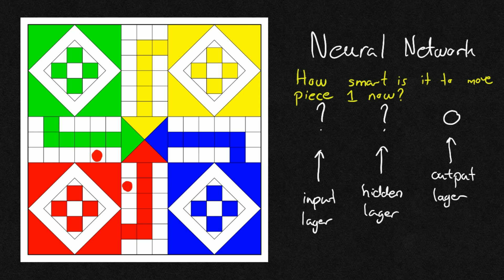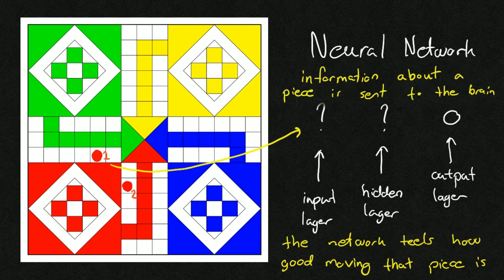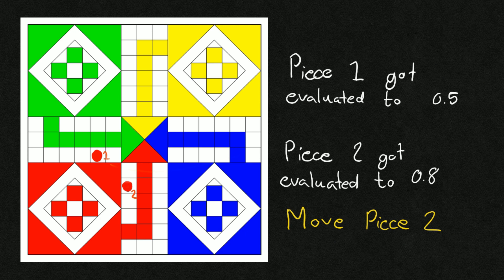What my player would do is that it went through all the pieces that are currently available on the board and slap all the information it knows through the neural network, and then the neural network would give it a value from zero to one. One meaning very, very good, this is absolutely the best move you can do, or zero meaning not very good. And then it would take the highest that is available.